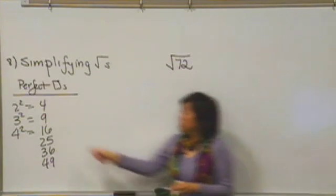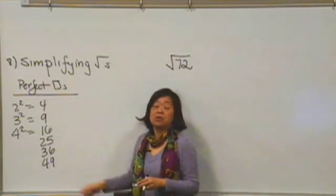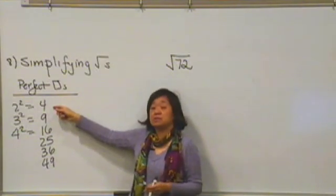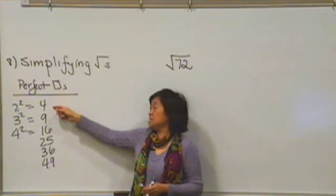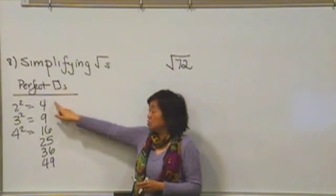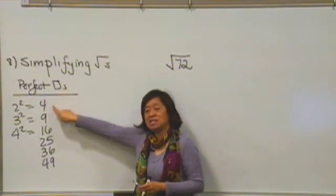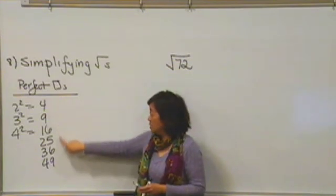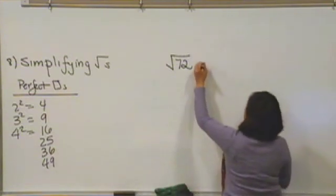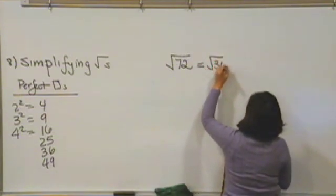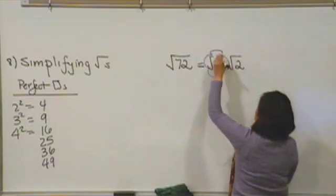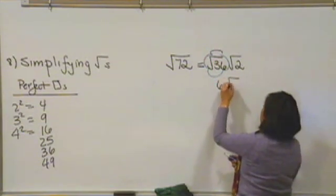Alright, let's see how you did. What we want to do is we want to find one of these perfect square numbers that goes into 72. Now, some of you might have gotten really excited thinking, Oh, 4 goes into 72. And it does. It goes in 18 times. But what you want to do is you want to find the largest number that goes into 72. So, let's hold on to that one and let's just check and see if we can find one that's larger. 36. 36 goes into 72. I can break up 72 into 36 times 2. The square root of 36 is the number 6. So, our answer would be 6 square root 2.